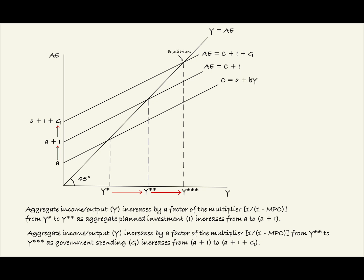We can see that aggregate income or output Y increases by a factor of the multiplier, 1 over the quantity 1 minus MPC, from Y-star to Y-double-star, as aggregate planned investment I increases from A to A plus I. Furthermore, aggregate income or output Y increases by a factor of the multiplier, 1 over the quantity 1 minus MPC, from Y-double-star to Y-triple-star, as government spending G increases from A plus I to A plus I plus G.